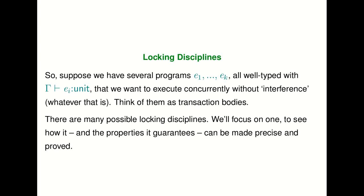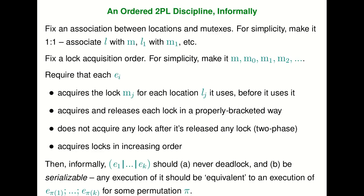So we can model problems with concurrency — which is good — but the question is how do we avoid problems like deadlock? Suppose we have several programs e1 to ek, all well-typed with type unit, and we want to run them concurrently. We want to execute them without interference — treat each as a transaction so each runs without interference from any other. The question is: is there some locking discipline that will ensure all of these will make progress and execute in a way that ensures no interference between them?